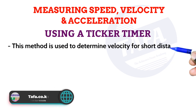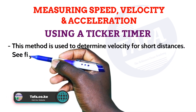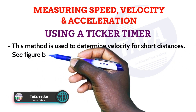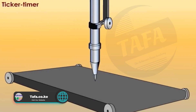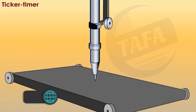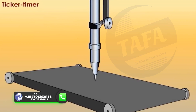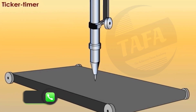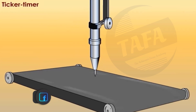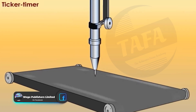The device we use is referred to as a ticker timer. Looking at the diagram, this is a simple schematic of a ticker timer. It comprises a vibrating steel strip, which is able to vibrate up and down.